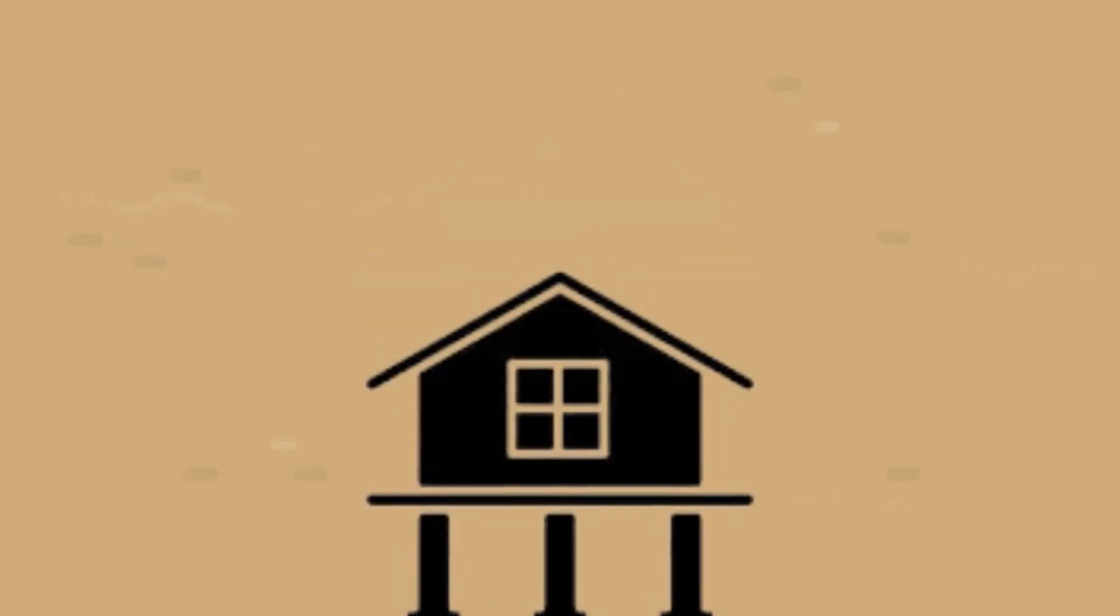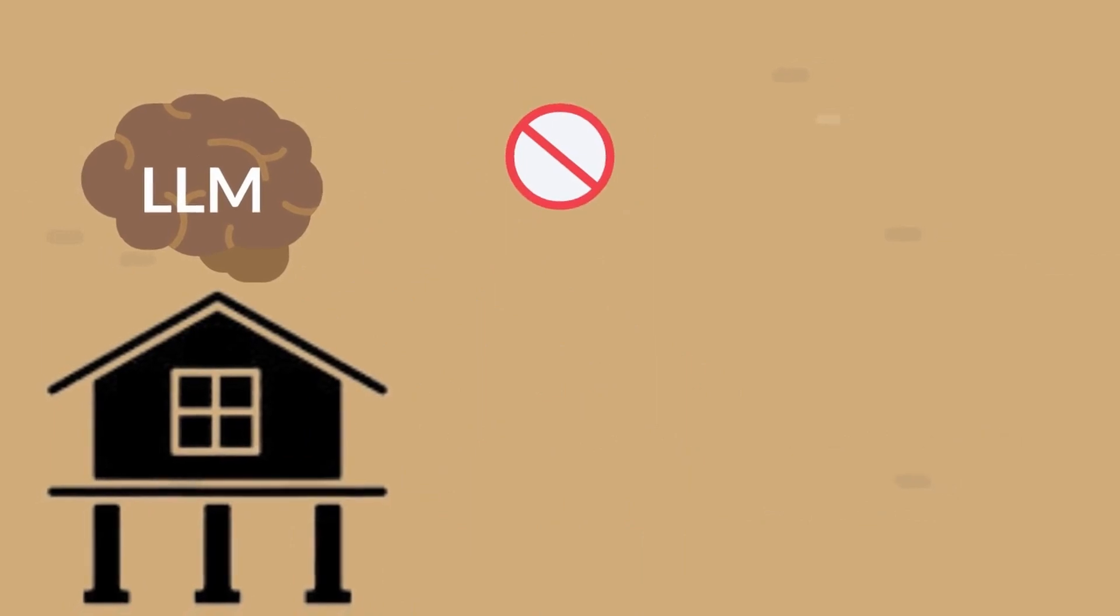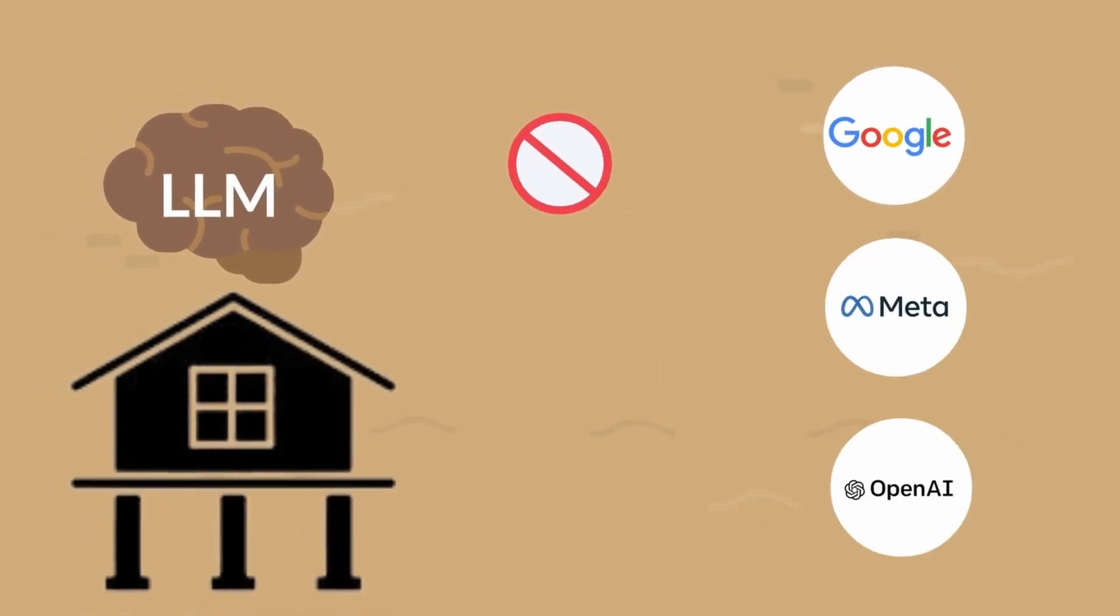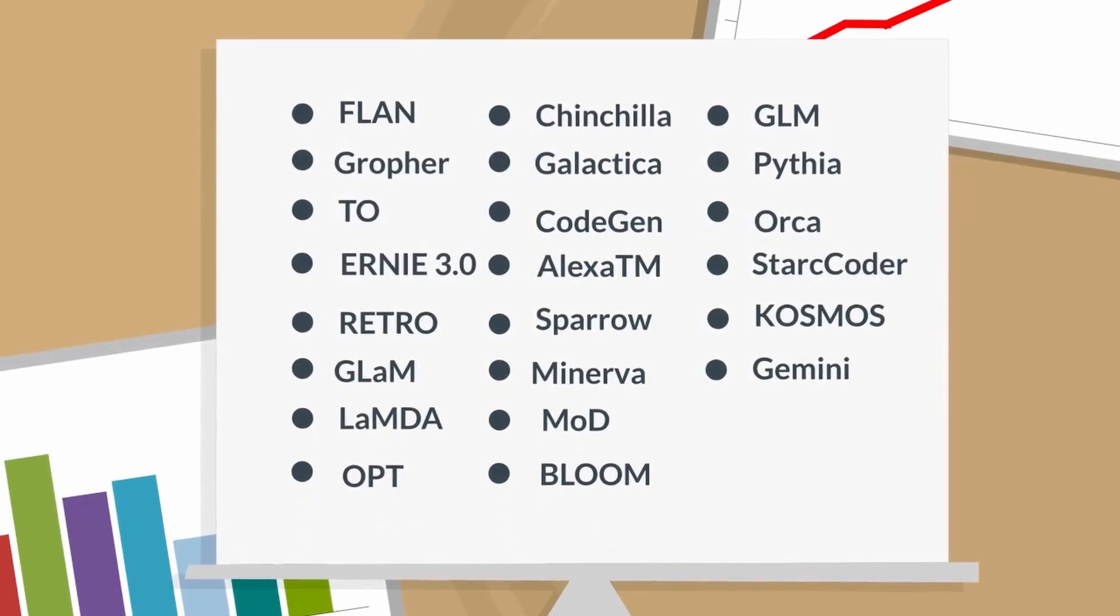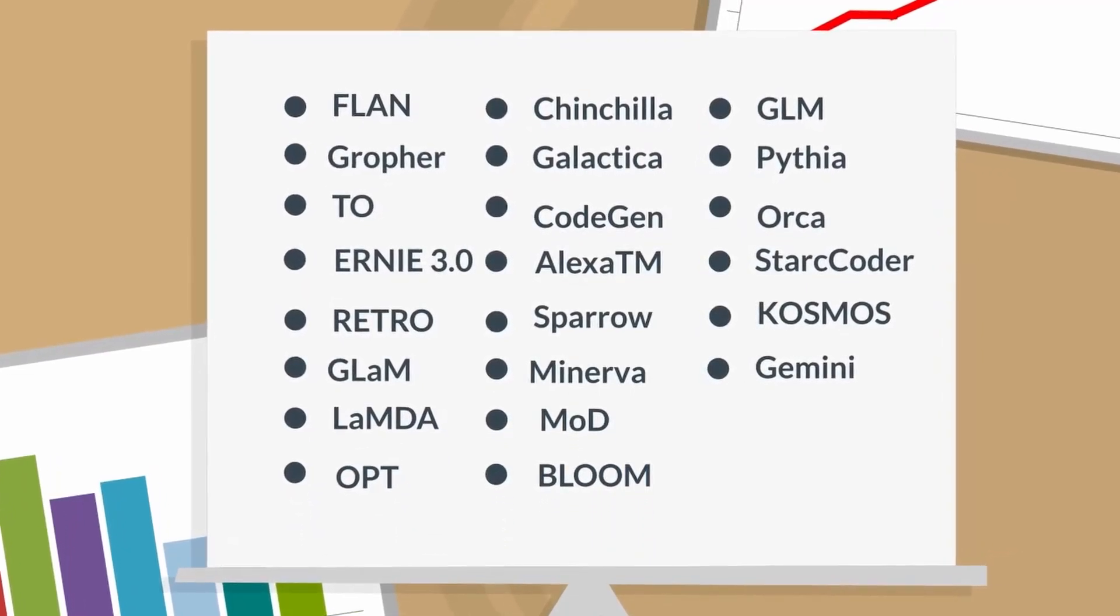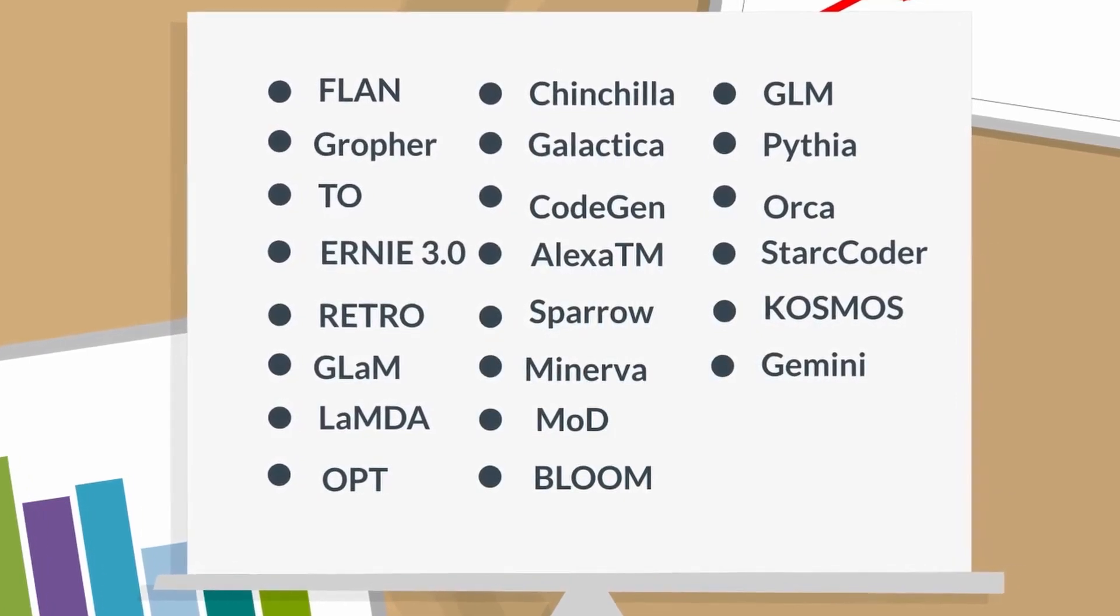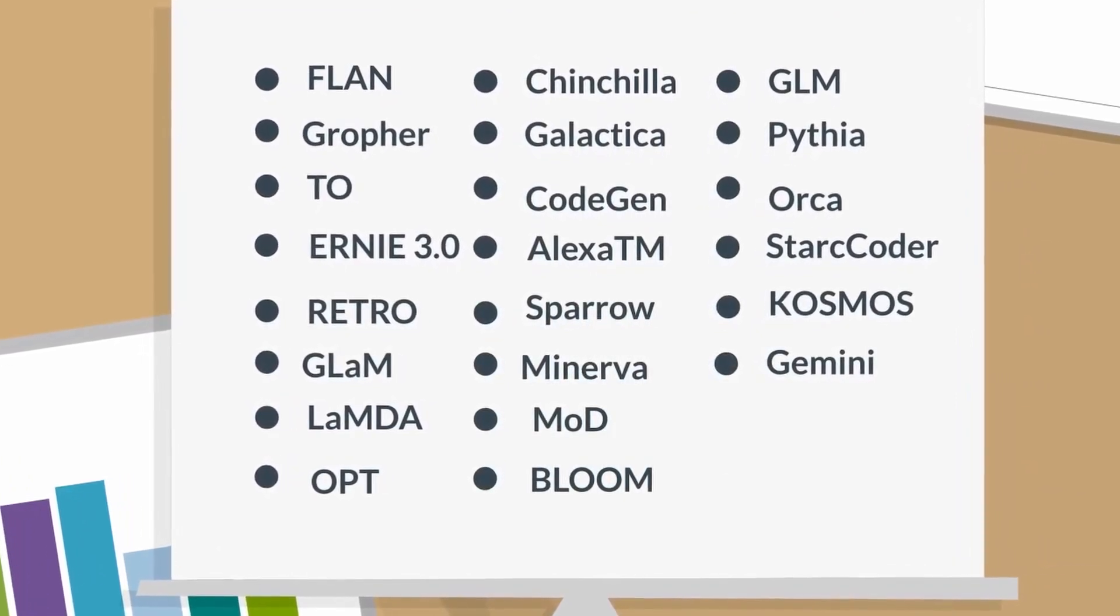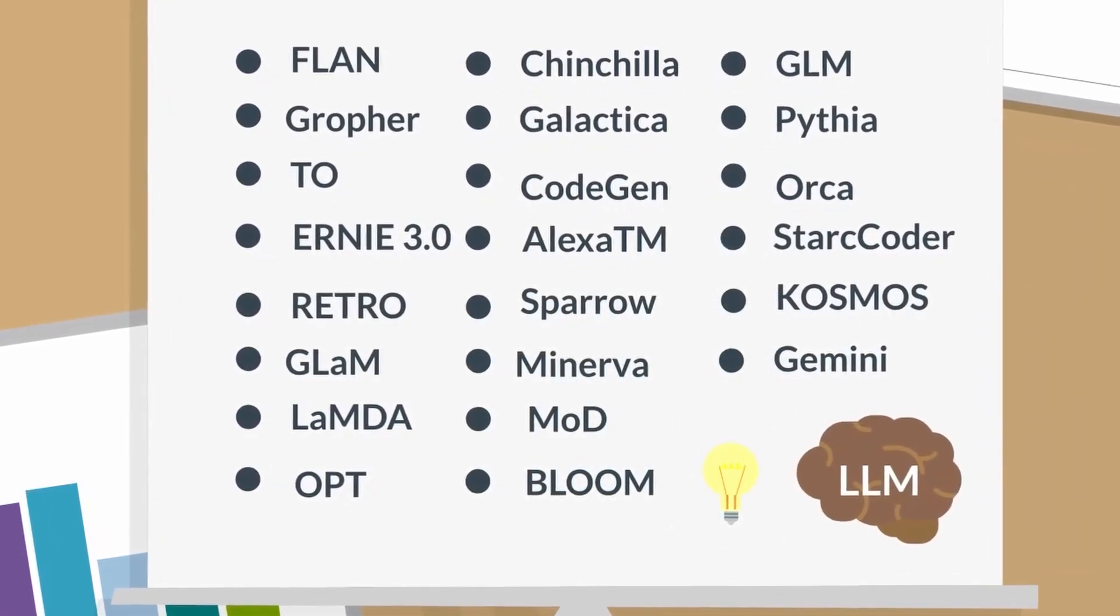Building upon this foundation, we venture into the realm of additional influential LLMs that, while not a part of the three big LLM families, have still contributed to propelling the domain forward. Models like Flan, Gopher, T0, Ernie 3.0, Retro, Glam, Lambda, Opt, Chinchilla, Galactica, Cogen, Alexa TM, Sparrow, Minerva, Mod, Bloom, GLM, Pythia, Orca, Starcoder, Cosmos, and Gemini represent the diversity and innovation that continue to enrich the LLM ecosystem.